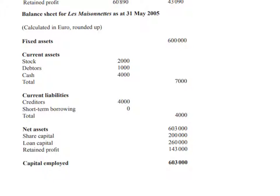The question relates to liquidity, and a balance sheet is provided for both 2005 and 2008. Looking at the 2005 balance sheet — for A-level, you only need the current ratio, but for IB you also need the acid test ratio. The current ratio is simply current assets divided by current liabilities. Current assets total 7,000 euros, comprising stock, debtors, and cash. Current liabilities consist of creditors of 4,000 euros, with no short-term borrowing.